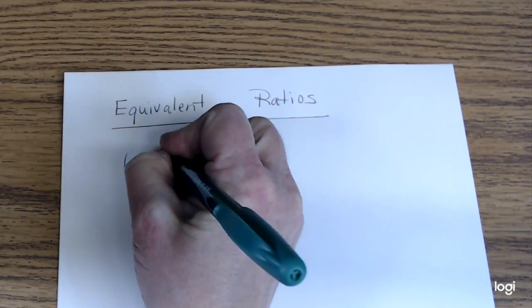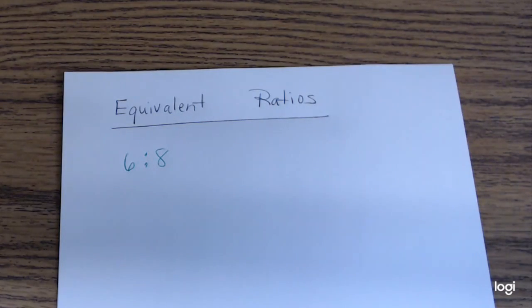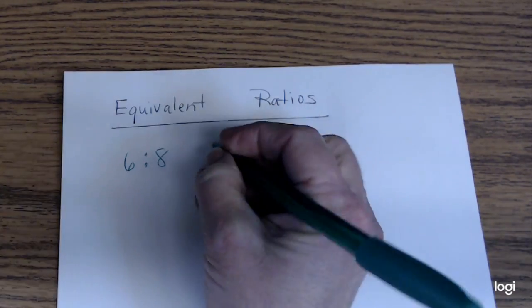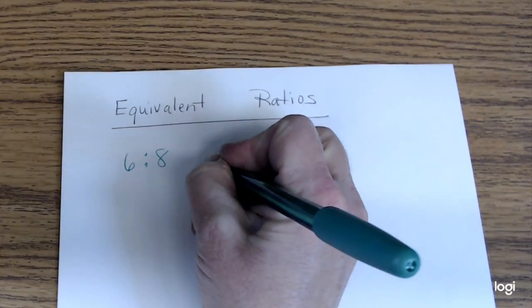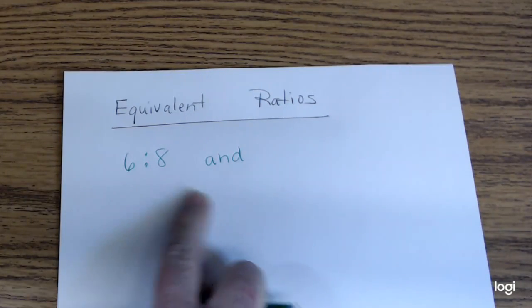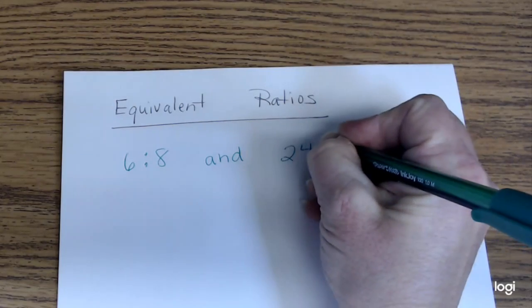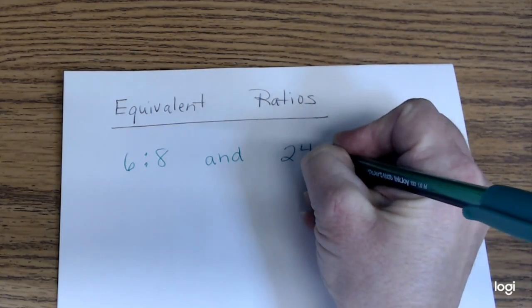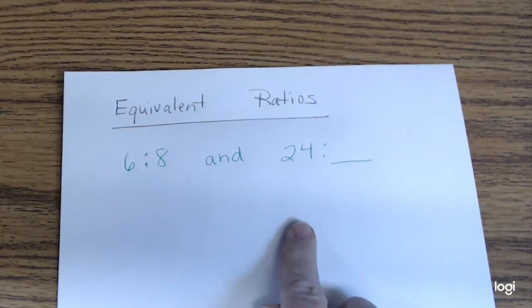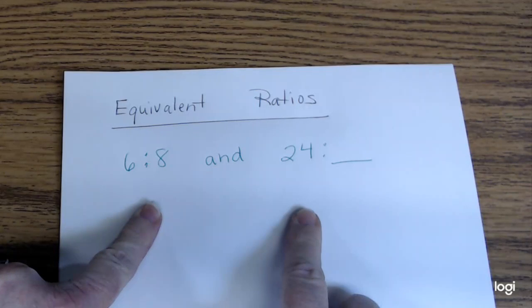I'd like for you to write down the ratio 6 to 8. What I want to know is whether you can find the equivalent ratio that would be 24 to what. I want these two to be equivalent ratios — how could we solve that?